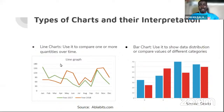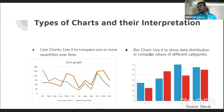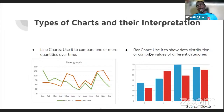Next we have bar charts. We use bar charts when we want to show data distribution — for instance, when we want to show whether a particular category or segment is larger than another. Maybe we have five categories, ten categories, even fifty categories, and we want to see the distribution of each.